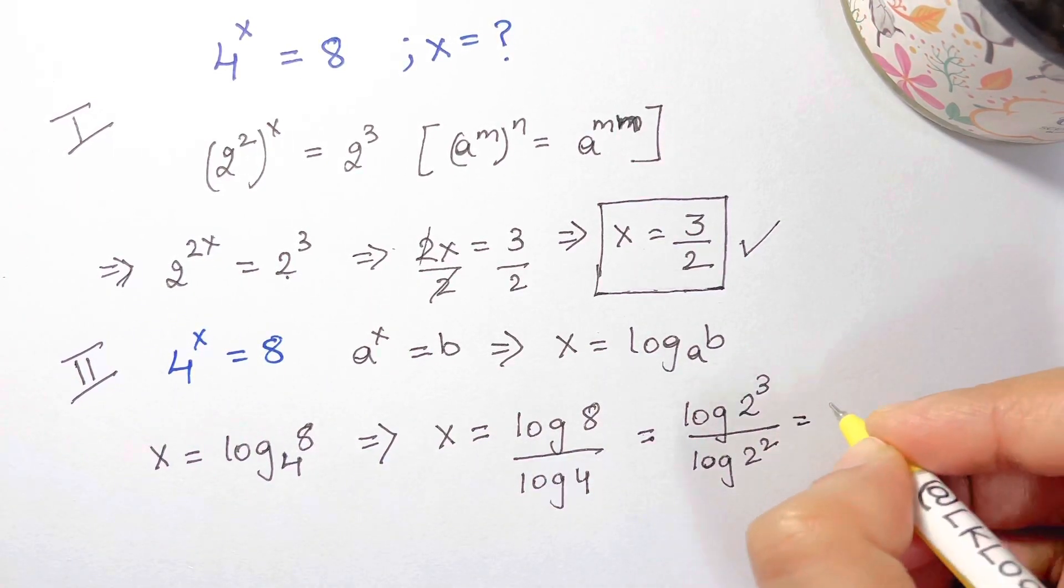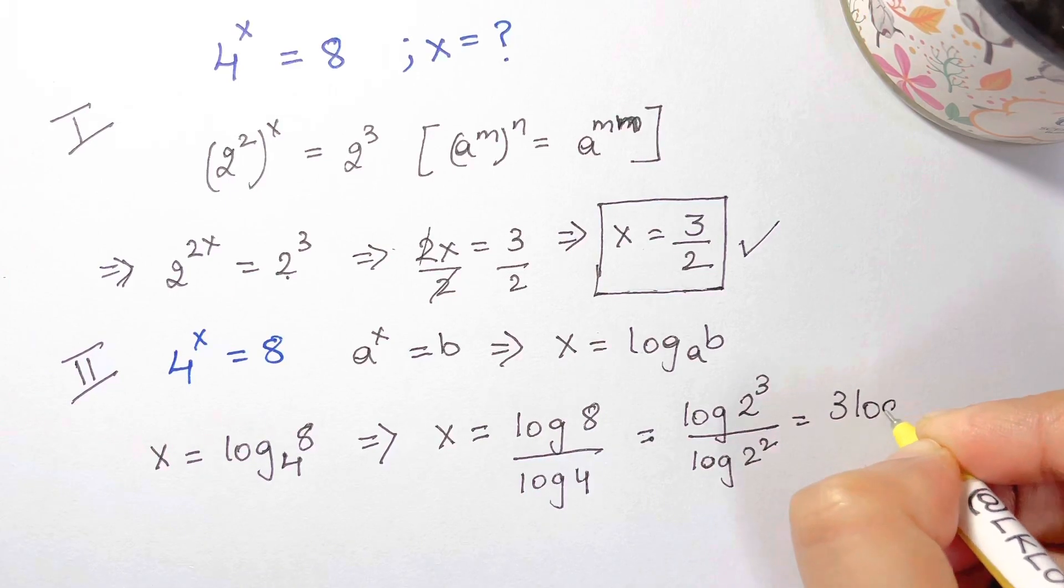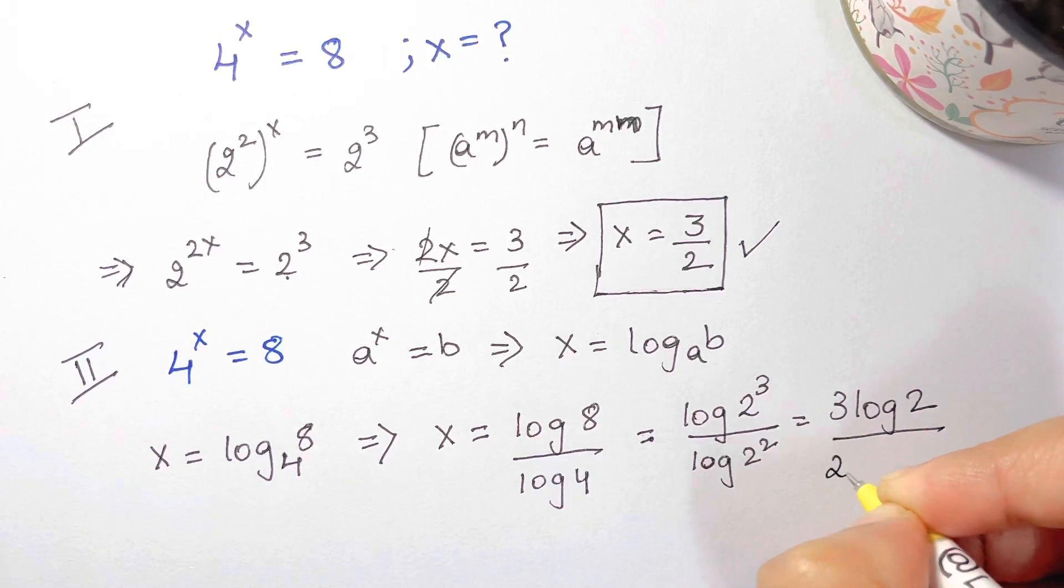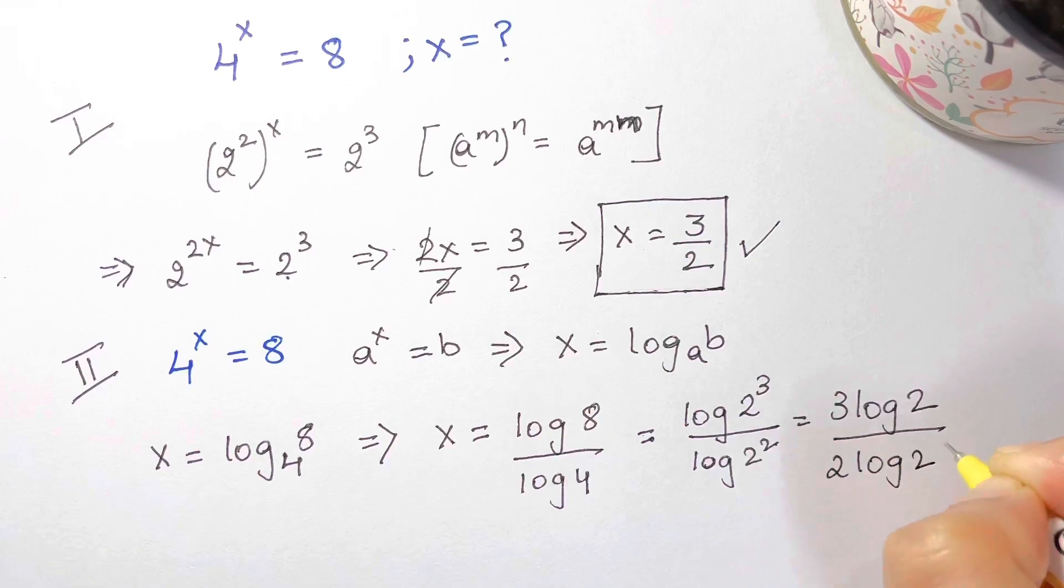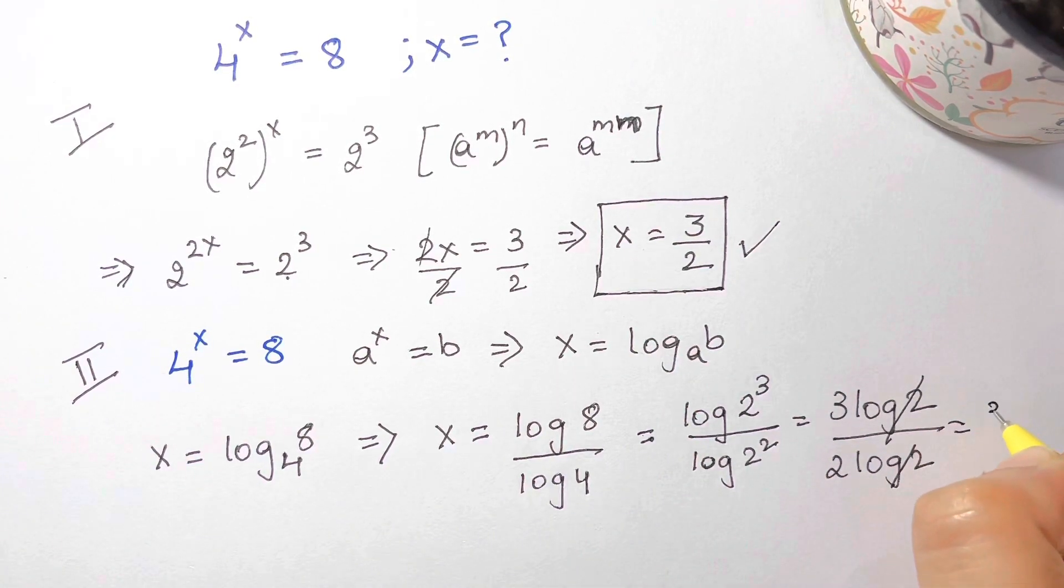Now this is 3 log 2 over 2 log 2. Log 2 gets cancelled and it's equal to 3 over 2.